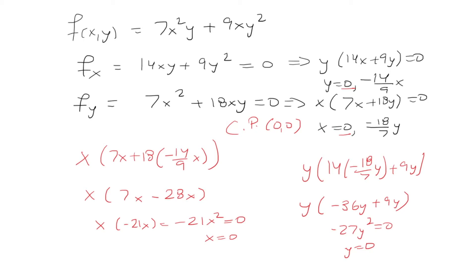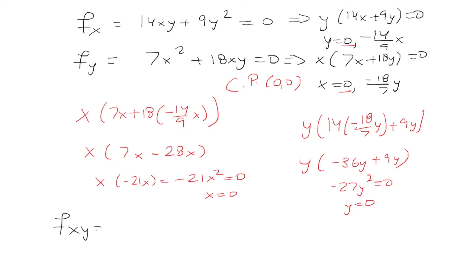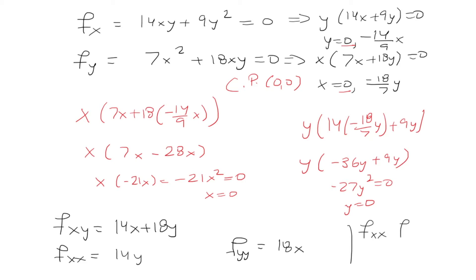The next step is to identify what this critical point is. For that, we need the second derivatives. The mixed partial (taking the x-partial derivative with respect to y) gives 14x + 18y. The second derivative with respect to x gives 14y, and with respect to y gives 18x. When we set up the determinant matrix and plug in the critical point (0, 0), all the second derivatives are 0. So the determinant is 0 and the test is inconclusive.